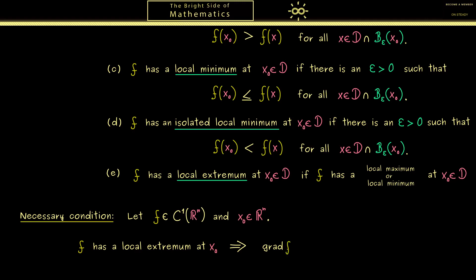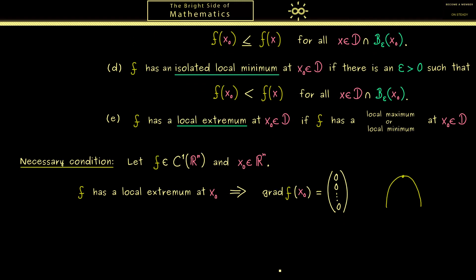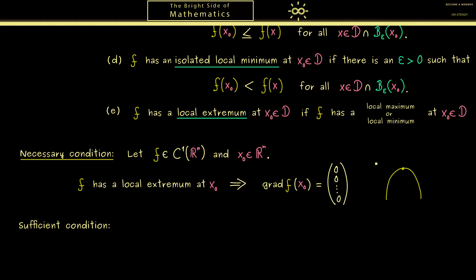The first derivative in the multivariable case is the gradient of f, and we say it vanishes if it equals the zero vector. This makes sense if you recall part 10, where we talked about directional derivatives: the gradient describes the direction of fastest increase, so at a local extremum there should be no direction with an increase. However, from the one-dimensional case we also know that this criterion is not sufficient for having a local extremum. But together with the second derivative we can get sufficient conditions — and naturally we ask if the same holds in the multivariable case.